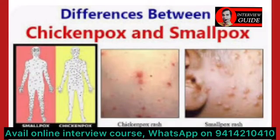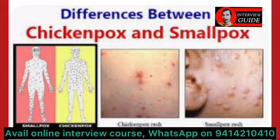Smallpox vs chickenpox — mainly smallpox is caused by the variola major. The last case seen in India was in 1975, the last case seen in the world for smallpox was in 1977 in Somalia, and eradication of smallpox was declared on 8th May 1980.